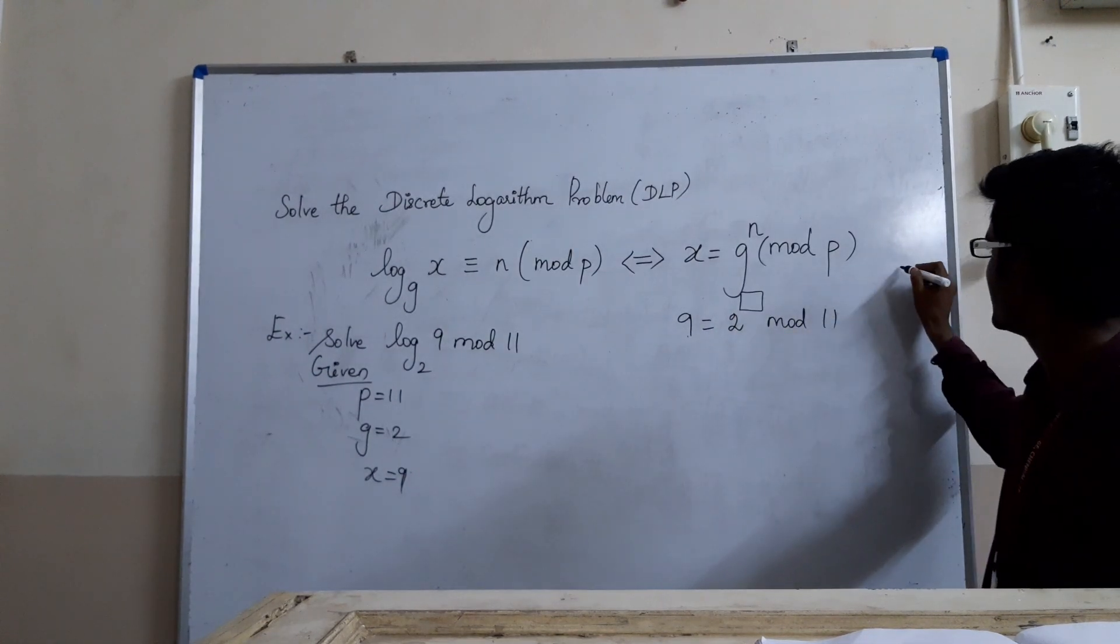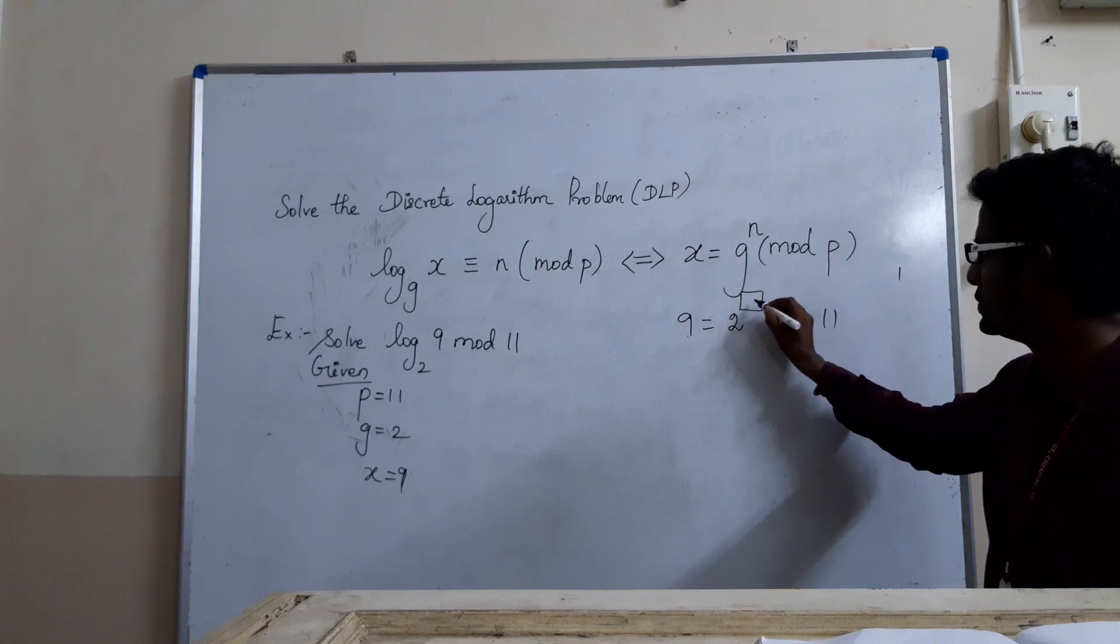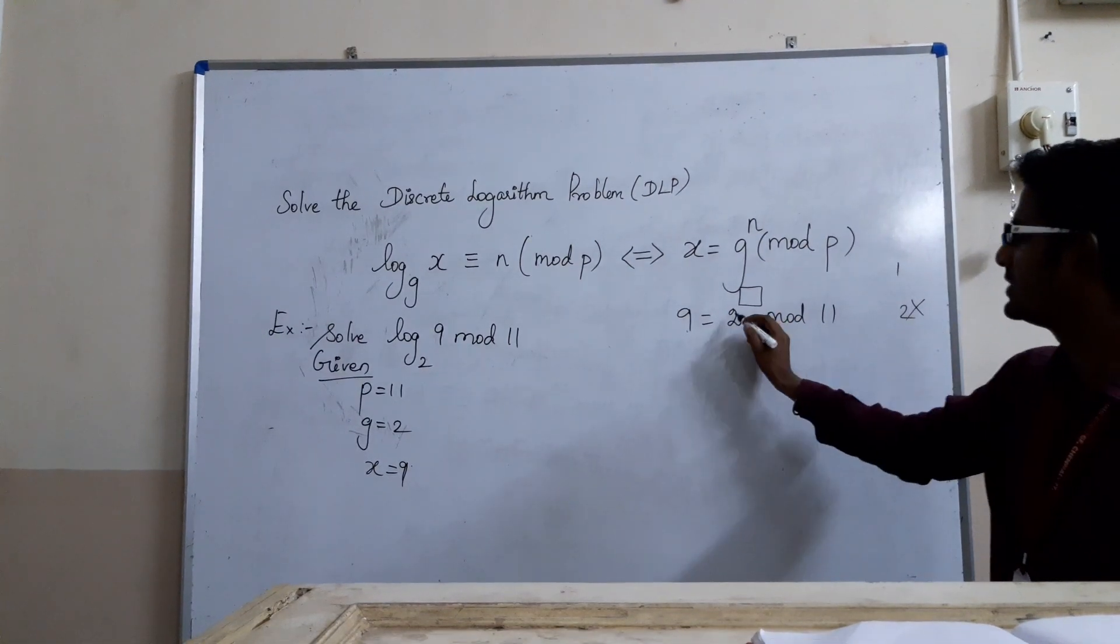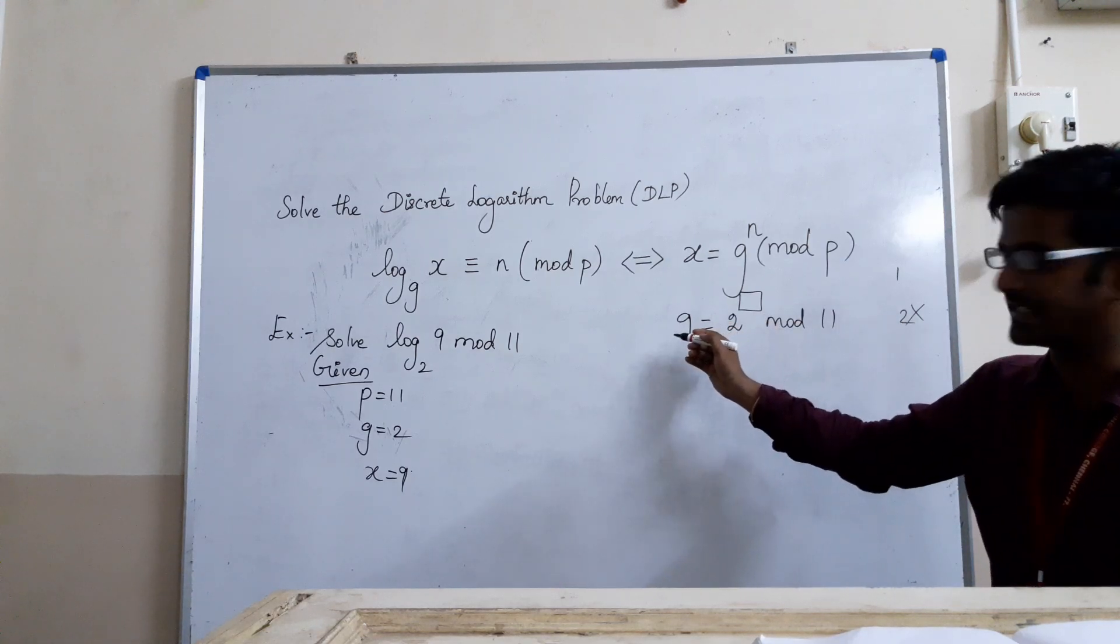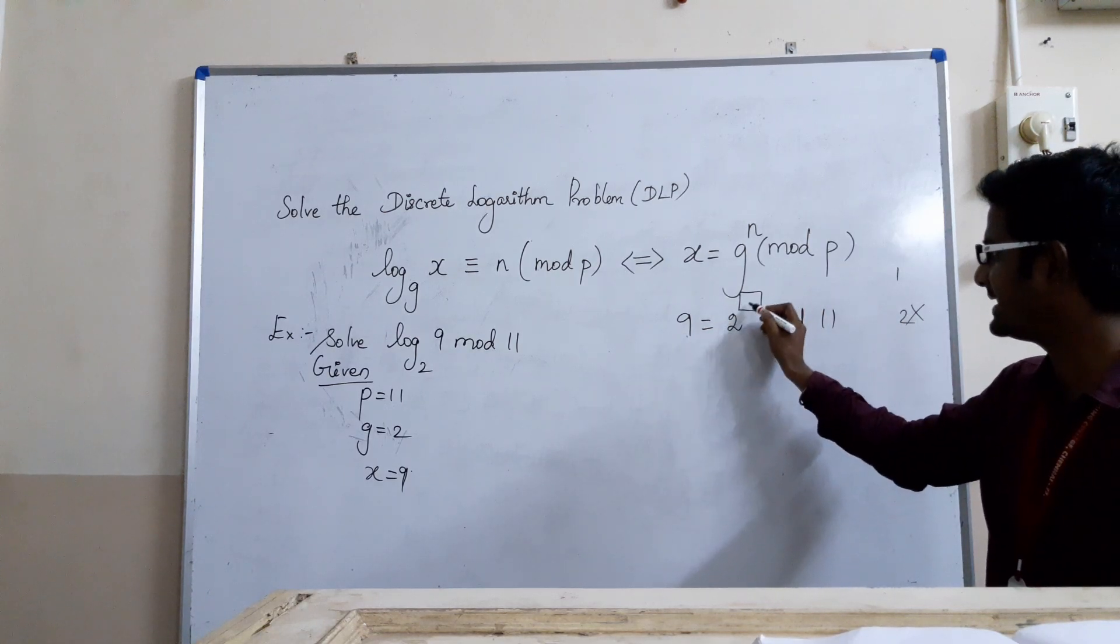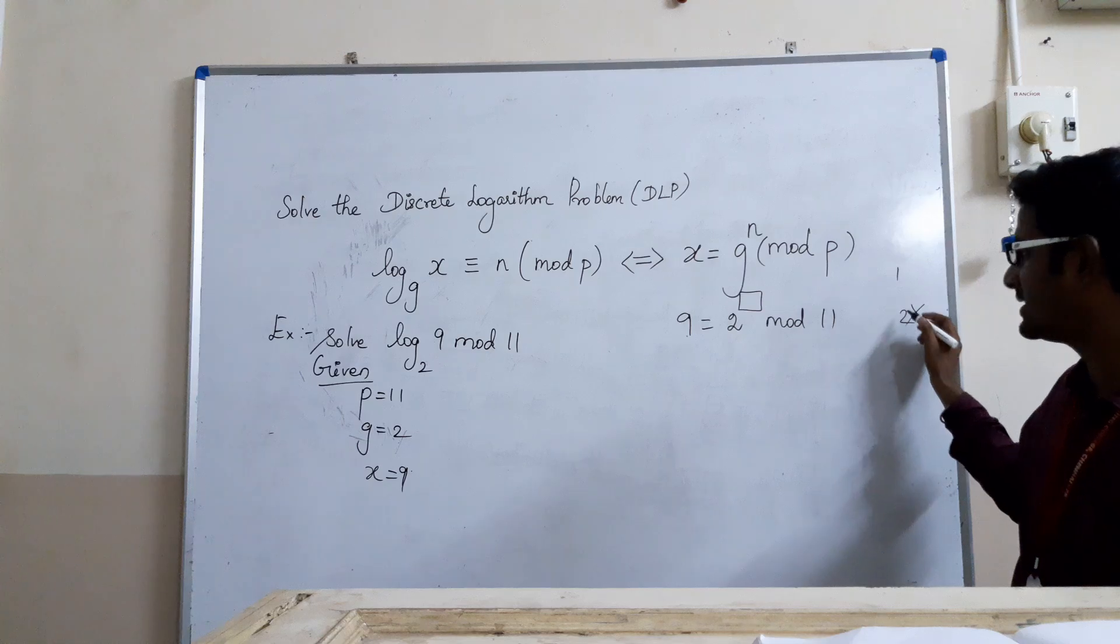For example, we'll start with 1. 2^1 = 2, 2 mod 11 is 2. No. 2^2 = 4, 4 mod 11 is 4. No, we're not getting 9. 2^3 = 8, 8 mod 11 is 8. No, this is not matching the criteria.